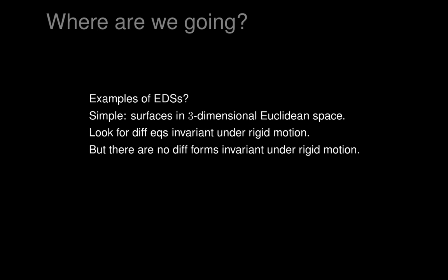The problem we first run into is that there really aren't any differential forms that are invariant under all rigid motions. There are the constant functions, but otherwise there aren't any non-constant differential forms that are invariant under rigid motion. So what do we do to construct these systems? In principle, you could try to look for exterior differential systems that don't consist of invariant forms but that are still invariant systems, but we won't head in that direction.